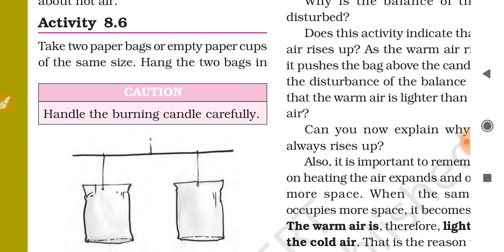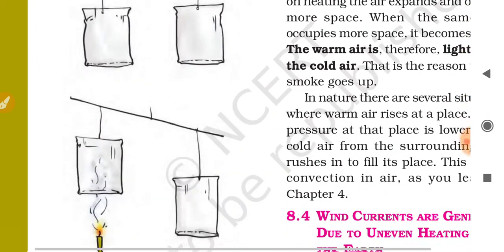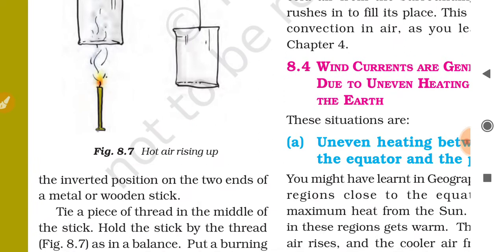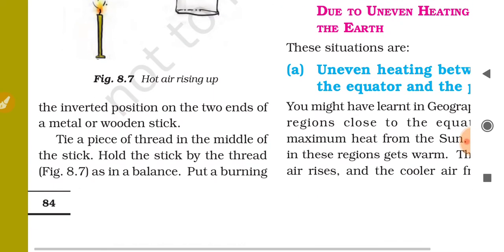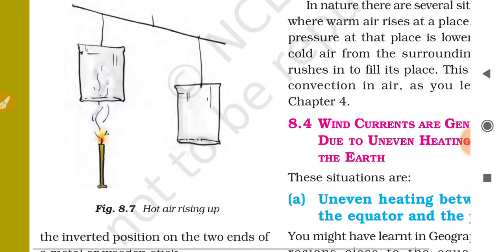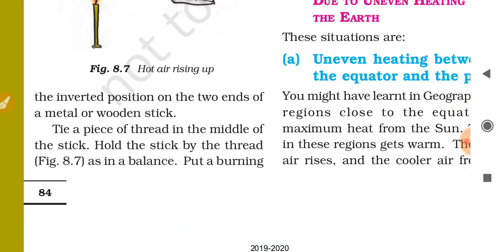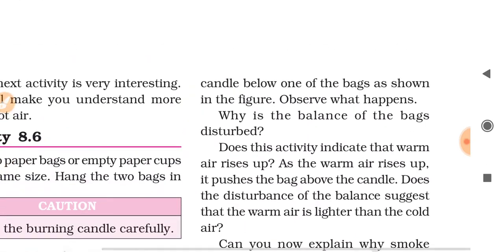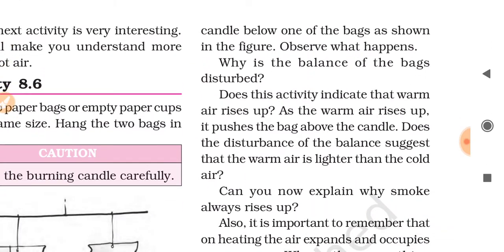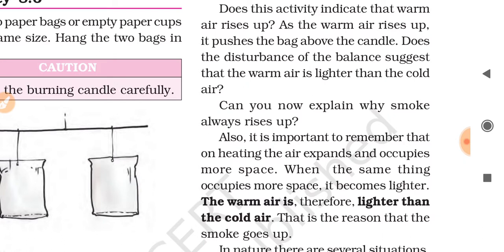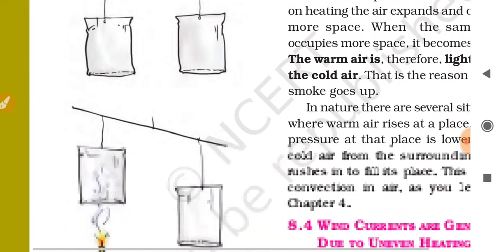The next activity is also very interesting. Take two paper bags or empty paper cups of the same size. Hang the two bags in inverted position on the two ends of a metal or wooden stick. Tie a piece of thread in the middle of the stick and hold the stick by the thread, as shown in figure 8.7. Put a burning candle below one of the bags. Observe what happens as the warm air rises up — it pushes the bag above the candle.